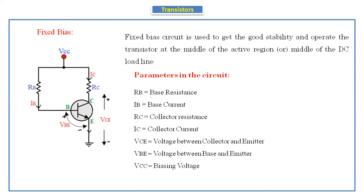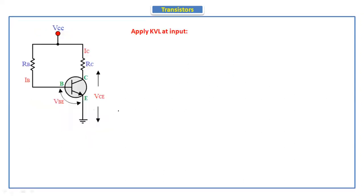Now let's apply KVL at the input side and the output side. By applying KVL we will get the equations. At the input side, the base current is flowing and at the output side the collector current is flowing.